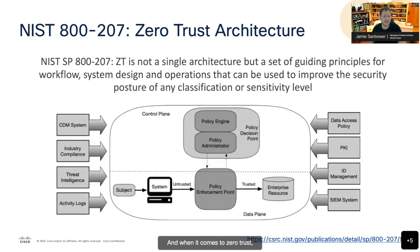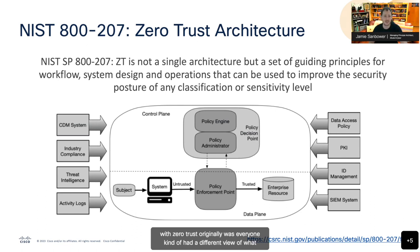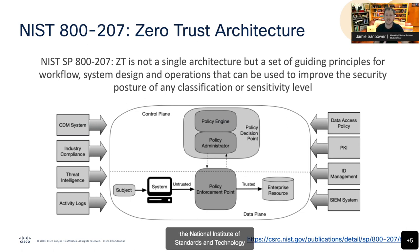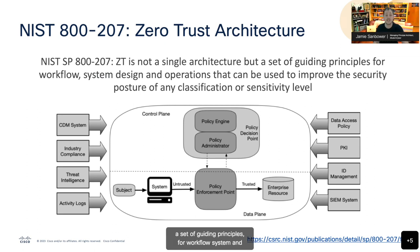When it comes to Zero Trust, it really does provide a great architecture for defense against sophisticated and even nation-state attacks. One of the challenges originally was that everyone had a different view of what Zero Trust should be. A few years back, the National Institute of Standards and Technology based in the United States came out with NIST 800-207 to define Zero Trust architecture in more detail. The biggest call-outs from NIST 800-207 are that Zero Trust is not just an architecture, but really a set of guiding principles for workflow, system, and operational design to help organizations improve the holistic architecture within security.